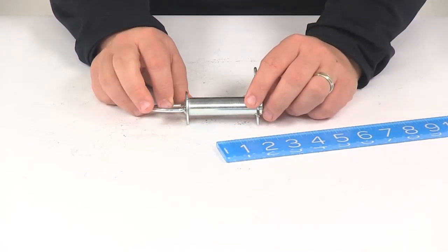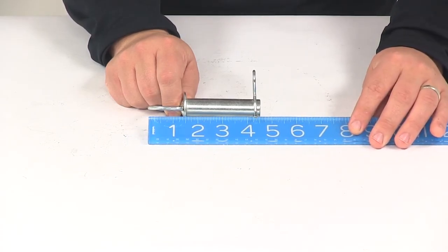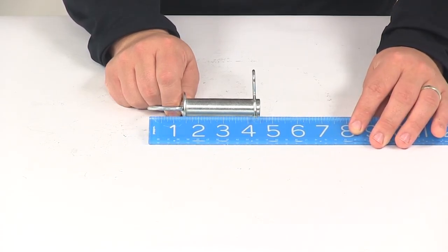The overall length measuring from the top of the pull tab to the end of the pin. That's going to give a measurement of pretty close to four and a half inches.